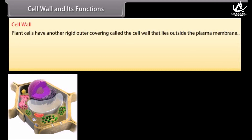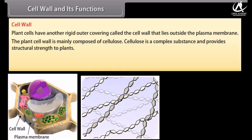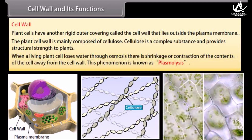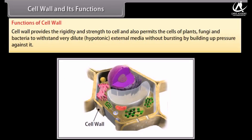Cell wall and its functions: Plant cells have another rigid outer covering called the cell wall, which lies outside the plasma membrane. The plant cell wall is mainly composed of cellulose, a complex substance that provides structural strength to plants. When a living plant cell loses water through osmosis, there is shrinkage or contraction of the cell contents away from the cell wall — this phenomenon is known as plasmolysis. The cell wall provides rigidity and strength, and permits cells of plants, fungi, and bacteria to withstand very dilute hypotonic external media without bursting.